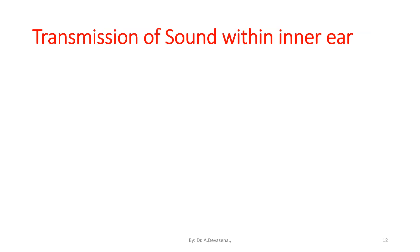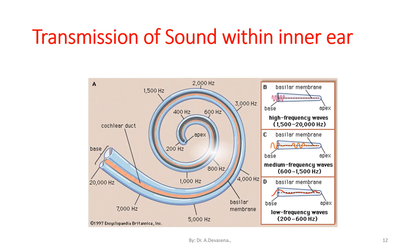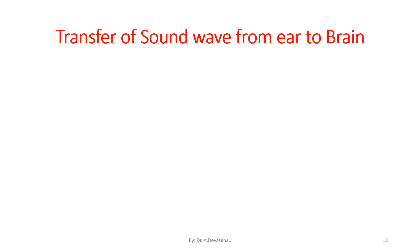The transmission of sound within the inner ear involves three types of waves: high frequency waves with a range of 1500 to 20000 hertz, medium frequency waves with a range of 600 to 1500 hertz. These waves are passed to the inner ear, as represented here.